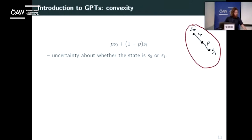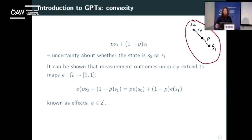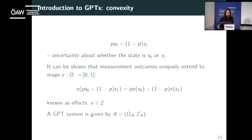The convex structure carries over from ensembles to the set of mixed states. We have some arbitrary convex set of mixed states, and a probabilistic combination of these represents uncertainty about which mixed state describes the system. The measurement outcomes introduced as maps from pure states to the unit interval can be uniquely extended to maps from the set of mixed states to the unit interval, convex-linearly — these extensions are known as effects. So a GPT system is characterized by the pair: mixed states Ω, and effects E.